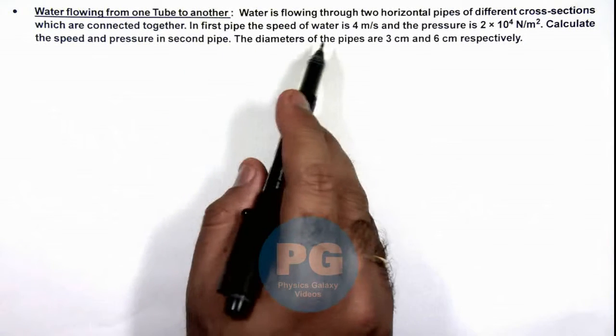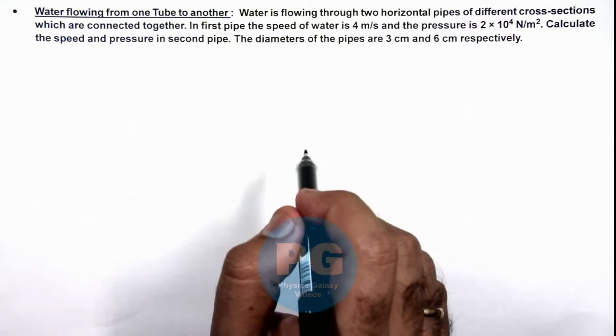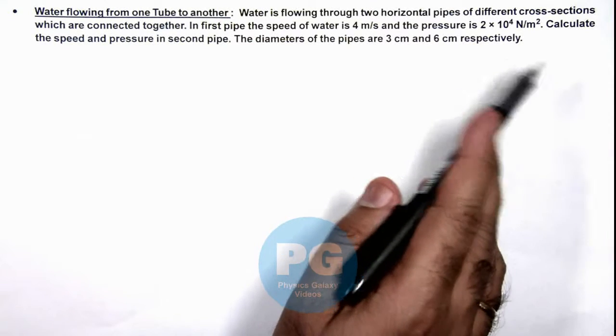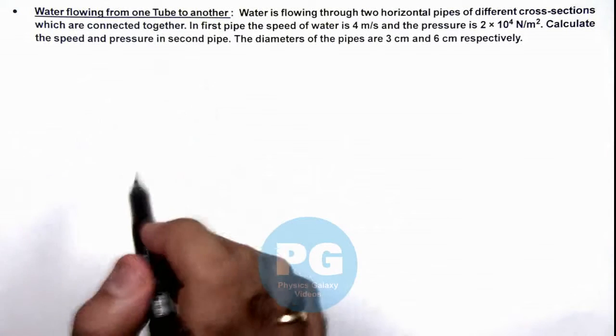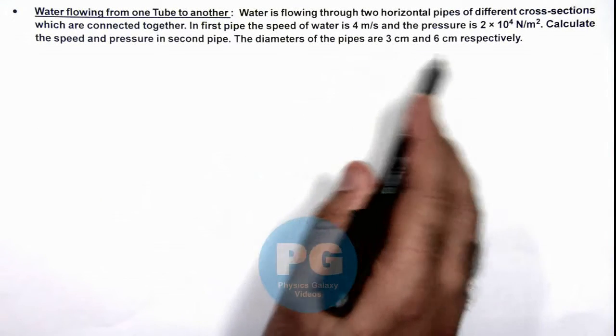In the first pipe, the speed of water is 4 meters per second and the pressure is 2×10⁴ Newtons per meter squared. We are required to calculate the speed and pressure in the second pipe. The diameters of the pipes are 3 centimeters and 6 centimeters respectively.